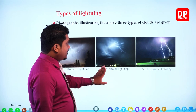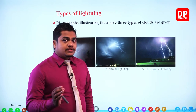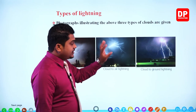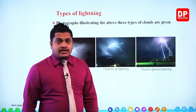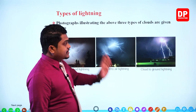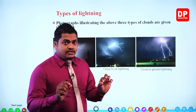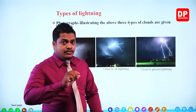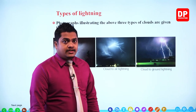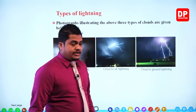The second one given is cloud to air lightning. This can be observed to a certain level because the discharges are going into the atmosphere. When we are looking at the sky, we can directly observe the lightning process — the lights which are traveling here and there when the electrical charges discharge to the atmosphere.